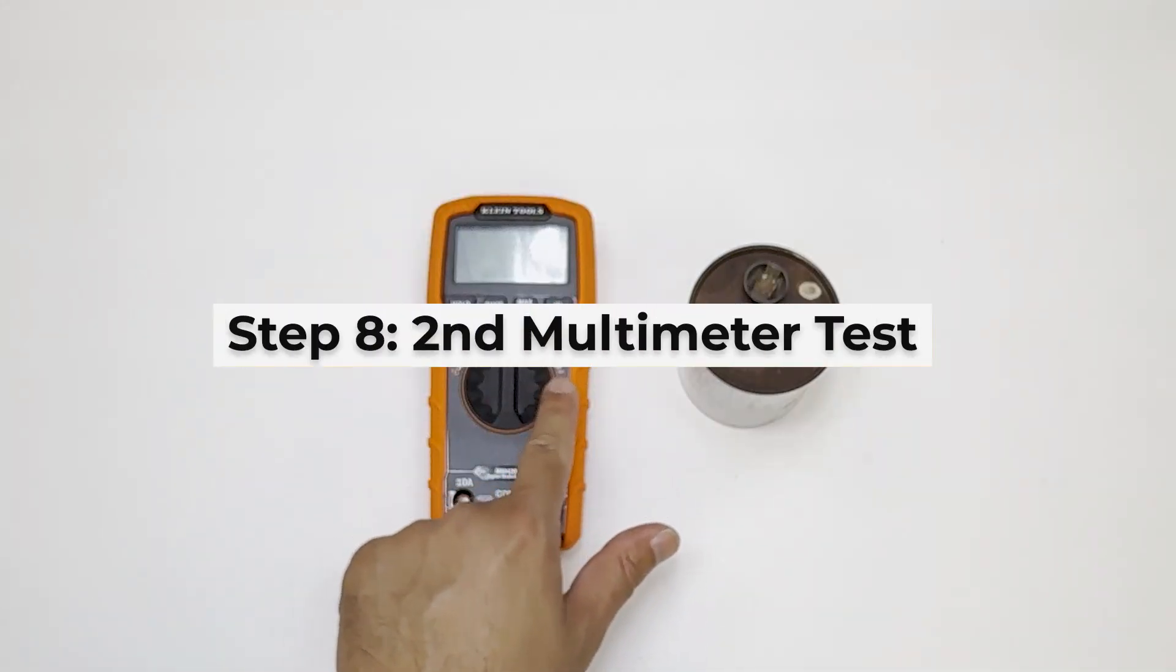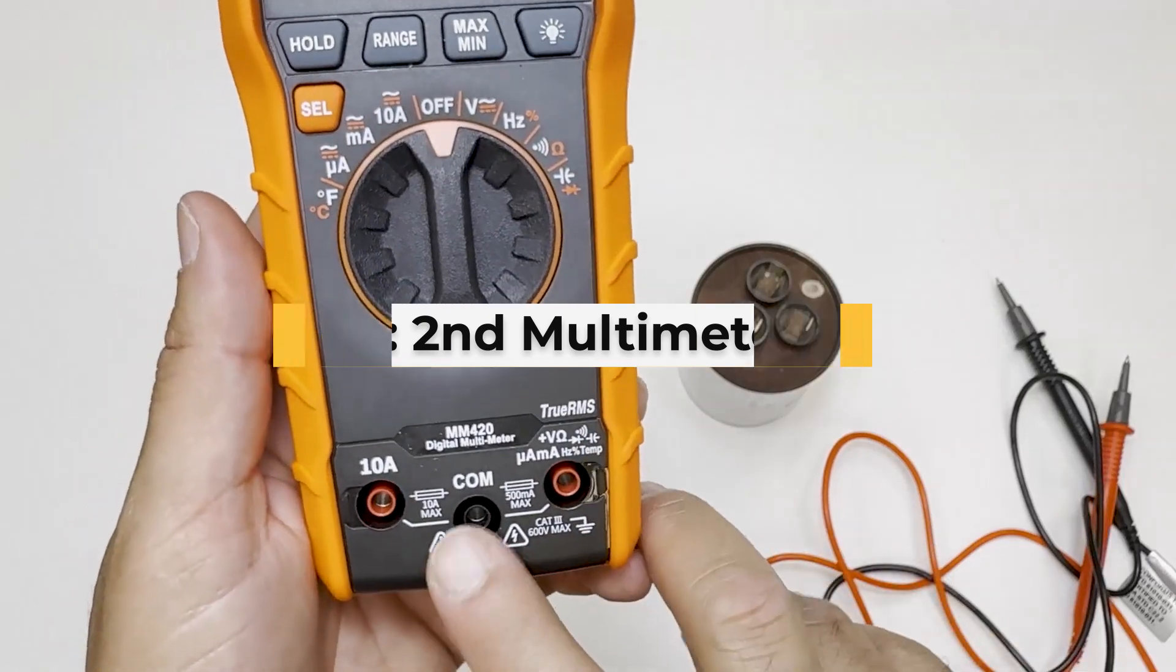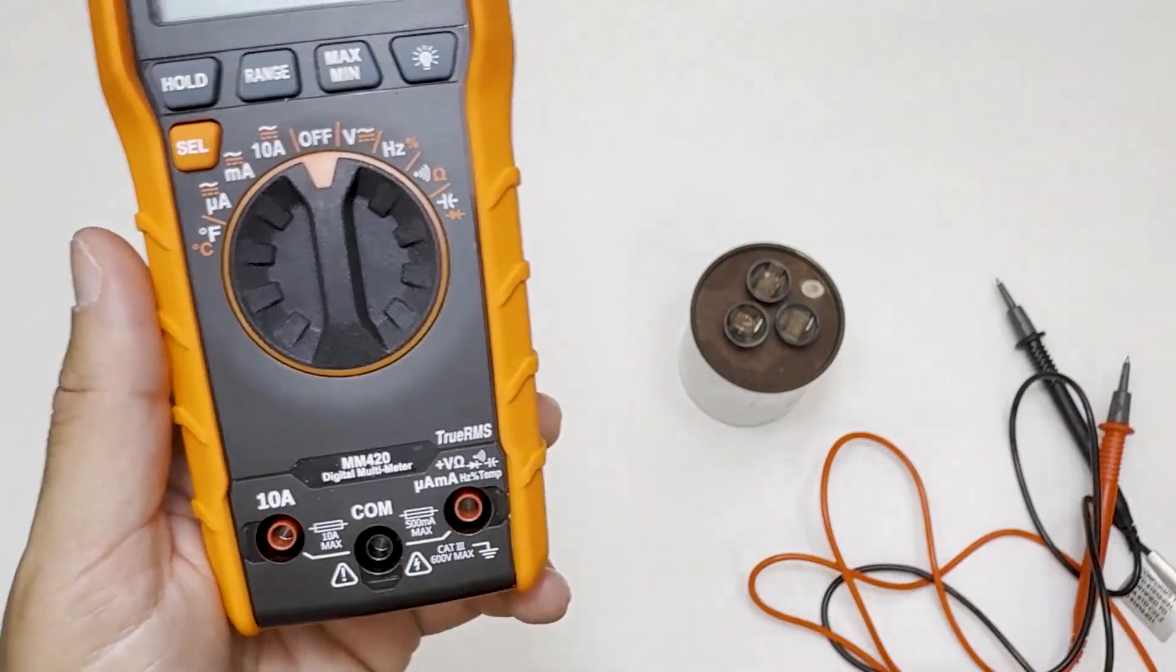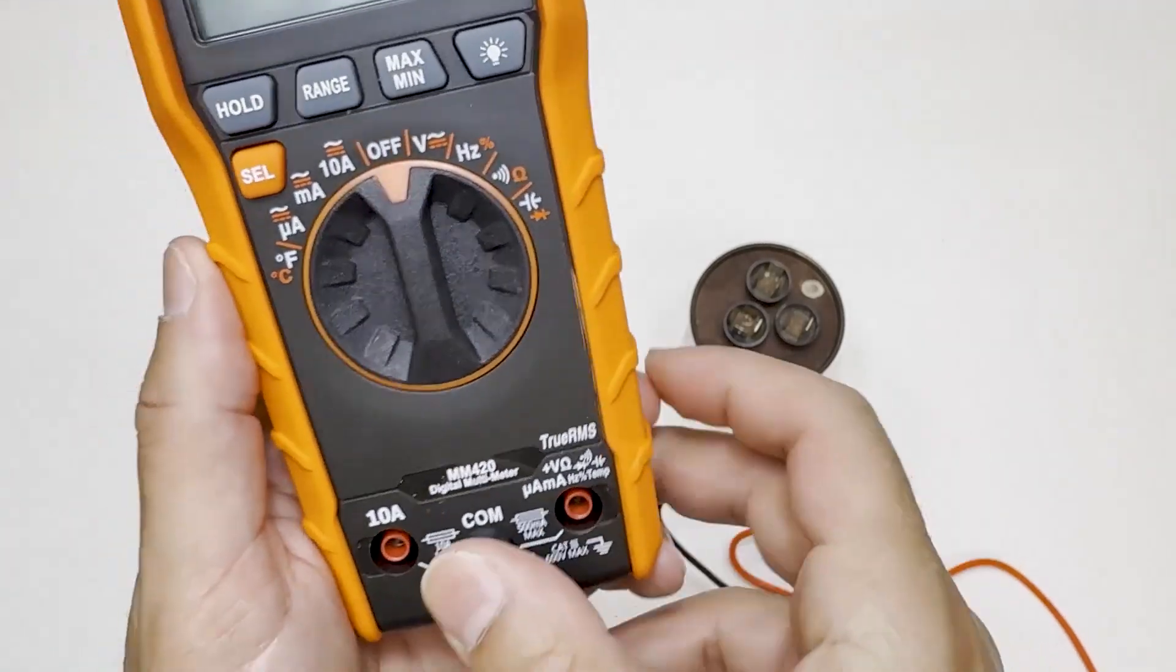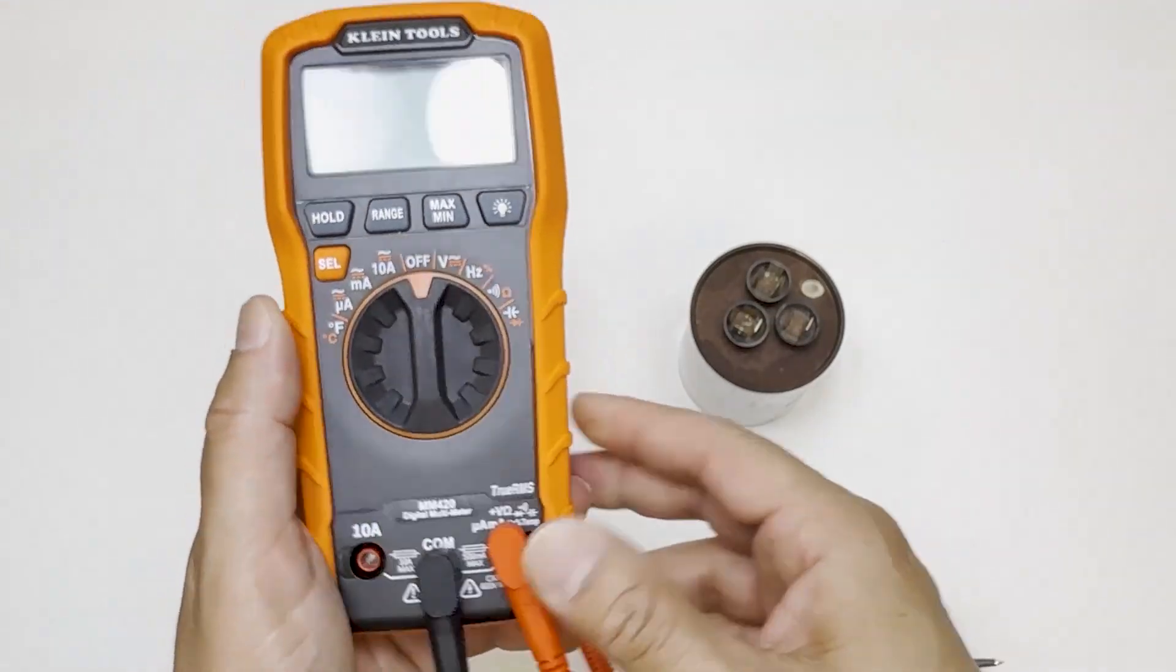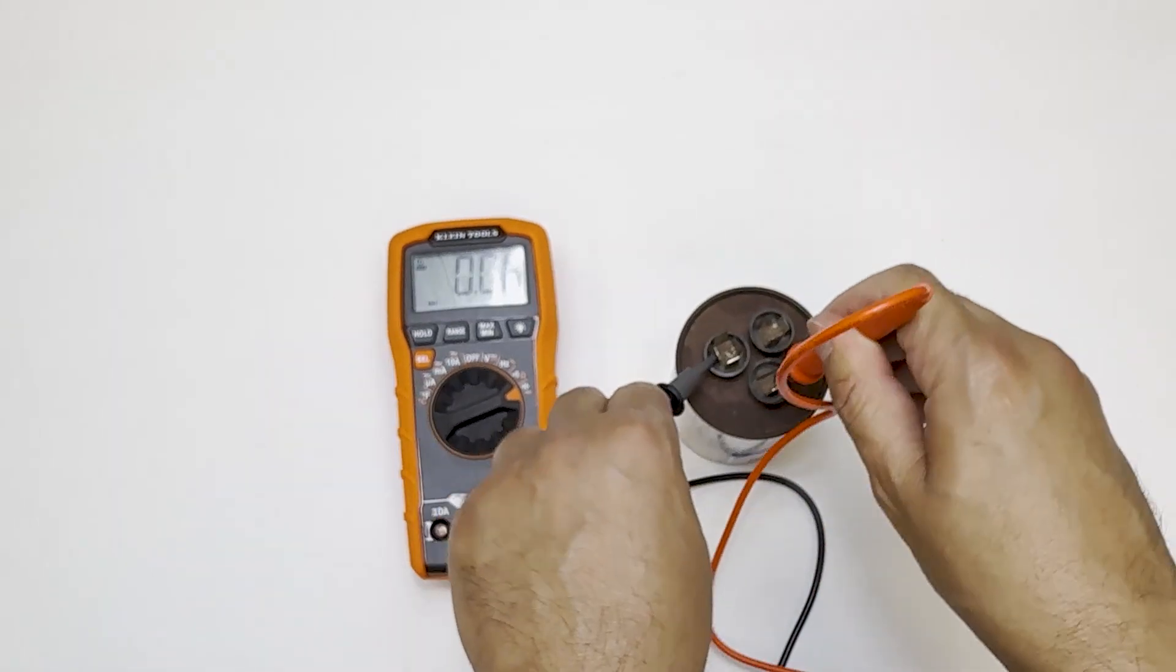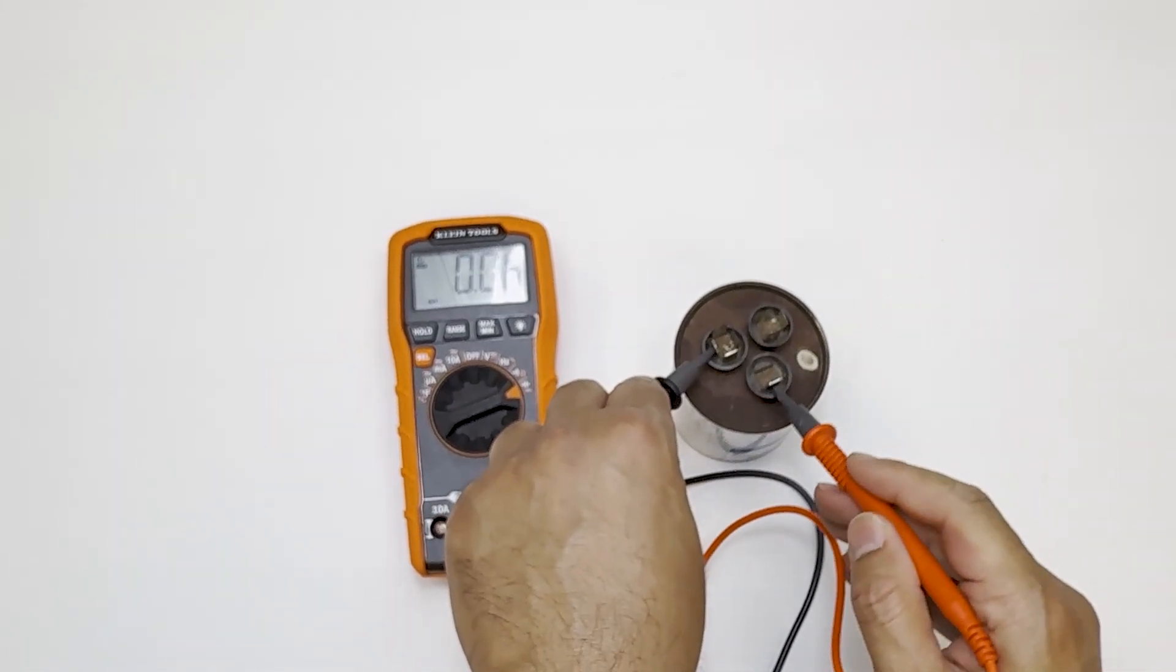Method 2: A multimeter with capacitance mode. Next, we'll use a multimeter that has a capacitance mode to get exact numbers. Step 1 would be to put the black probe in the common and the red in capacitance. Step 2 would be to switch the multimeter to capacitance setting. Step 3 would be putting the black lead onto C and the red probe onto the terminal that you're testing.